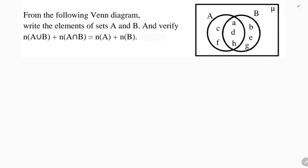From the following Venn diagram, write the elements of set A and B, and verify that n(A∪B) plus n(A∩B) equals n(A) plus n(B). First, we'll write the elements of set A.